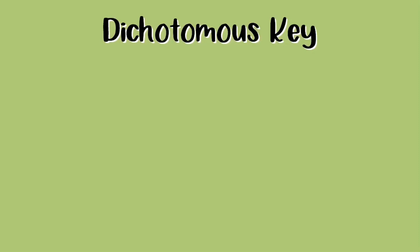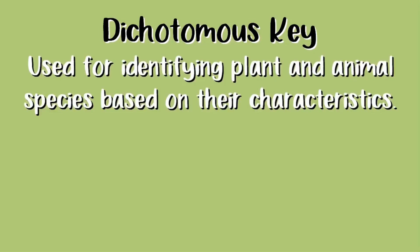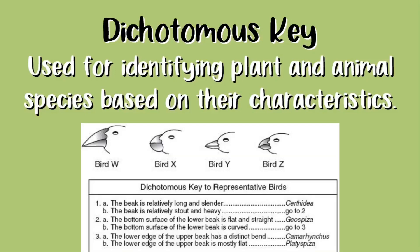Now let's talk about the dichotomous key. What is it used for? It's used for identifying plant and animal species based on their characteristics. Here's an example of what a dichotomous key would look like.